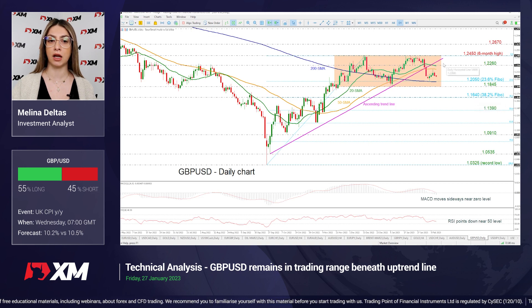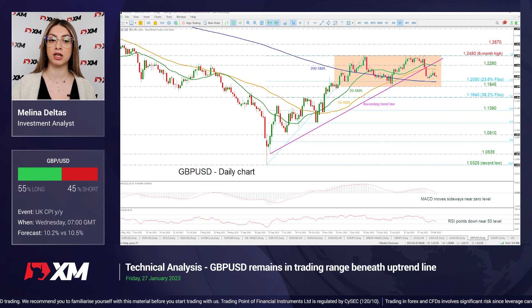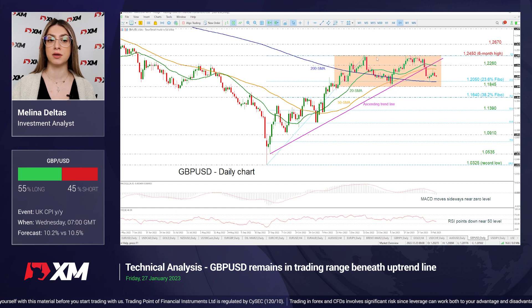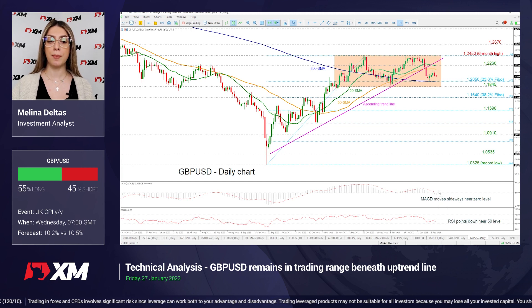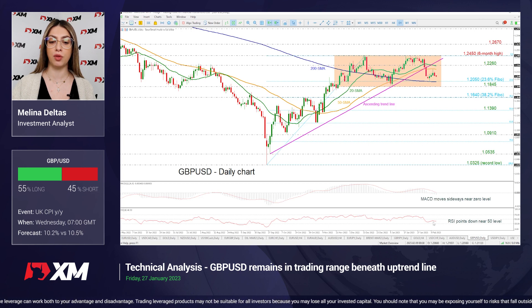On the flip side, if the price surpasses these short-term SMAs and this uptrend line, then it may challenge the obstacle of 1.2450 which was tested several times in the past, meeting the 1.2670 resistance and shifting the outlook to bullish. The MACD is moving beneath its trigger and zero lines, while the RSI is flattening below the 50 level.